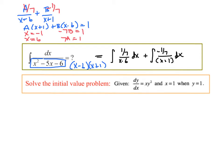And that integral should be pretty easy. It's (1/7) times the natural log of (x minus 6), and minus (1/7) natural log of (x plus 1).